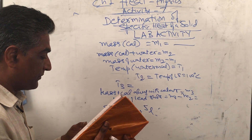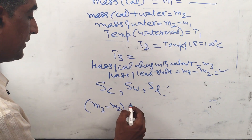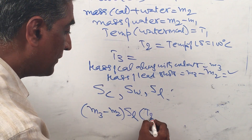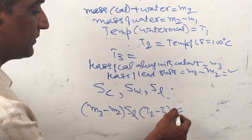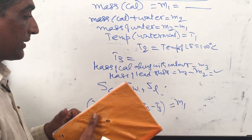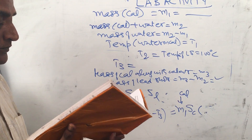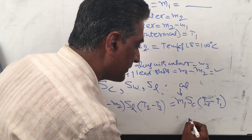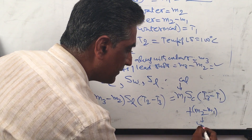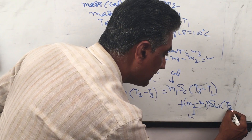Heat lost by the lead shots: (m3 − m2) × SL × (t2 − t3). Heat gained by the calorimeter: m1 × SC × (t3 − t1). Heat gained by the water: (m2 − m1) × SW × (t3 − t1). Setting heat lost equal to heat gained gives the full equation.